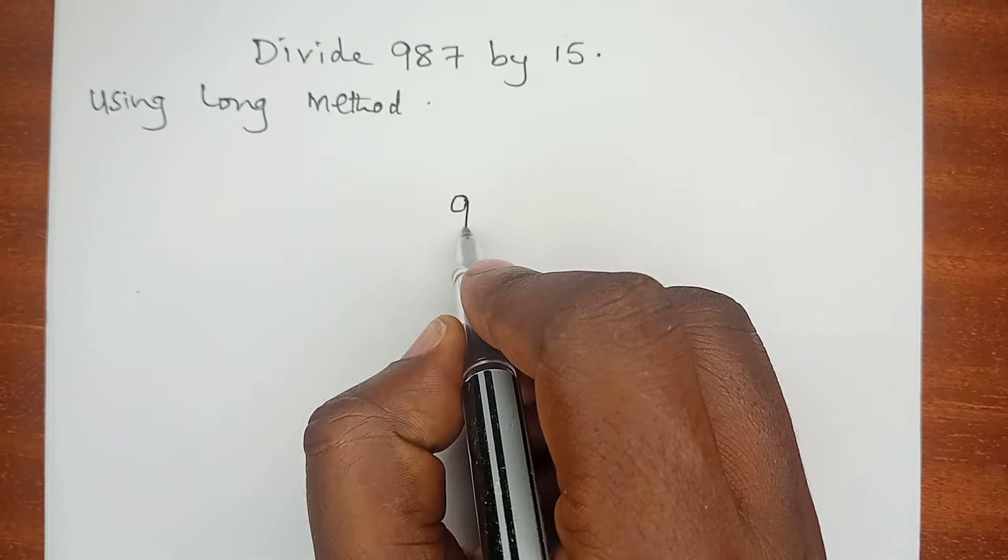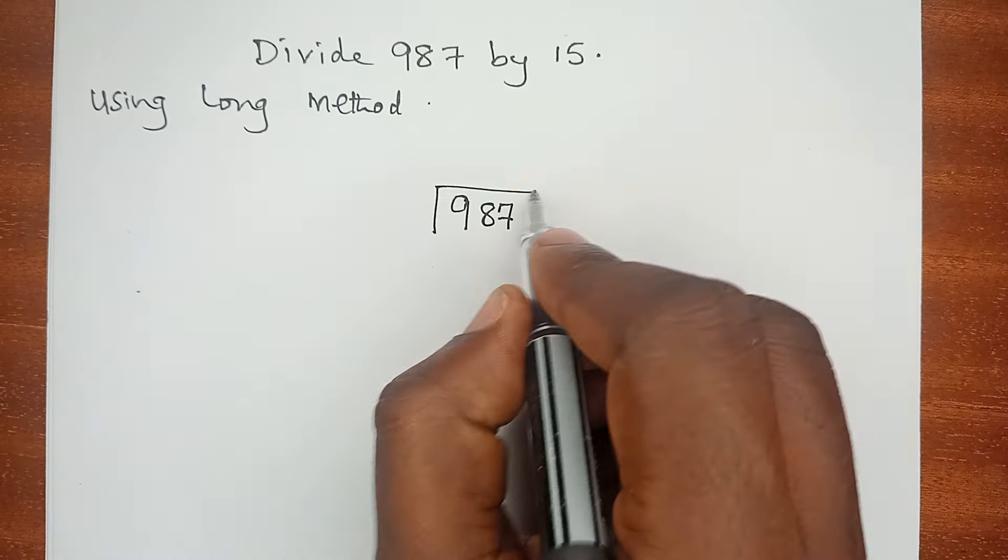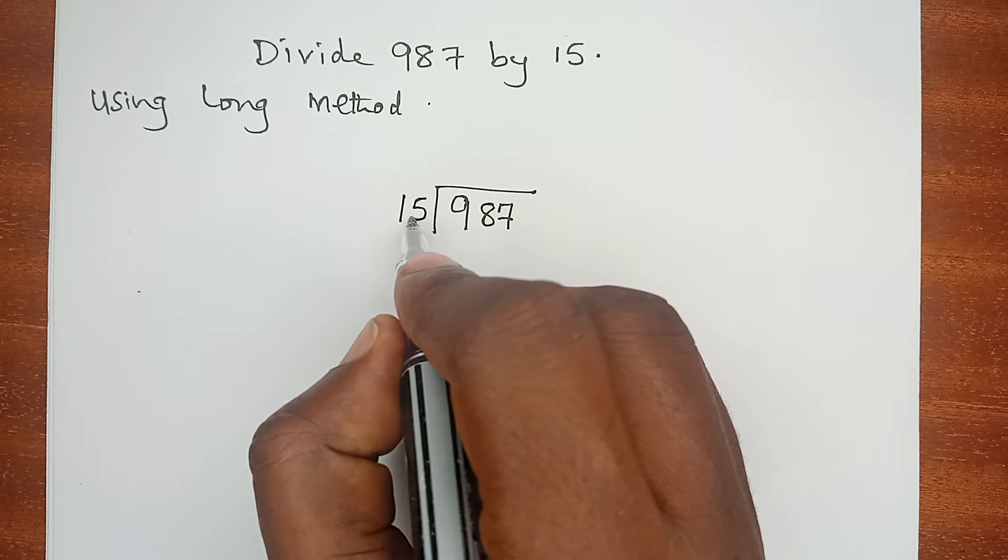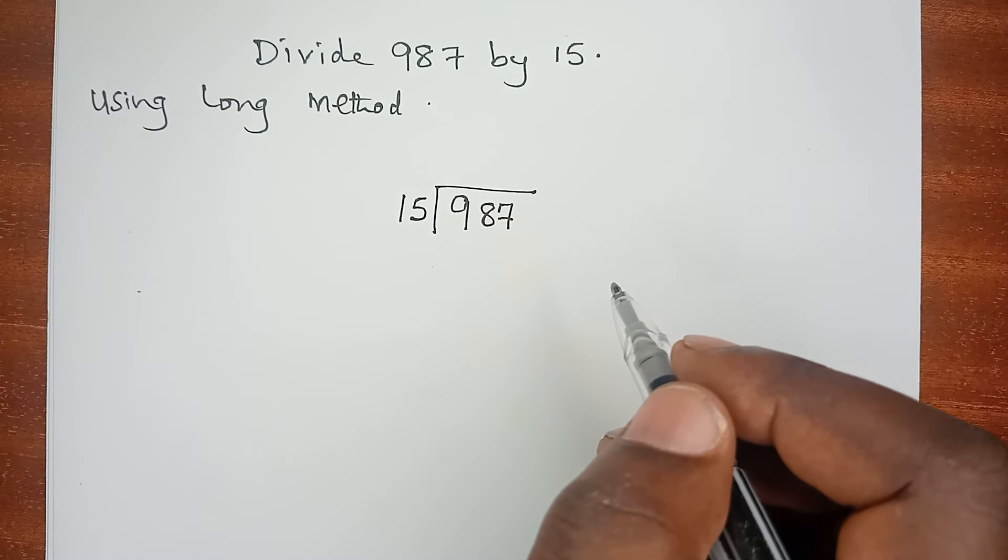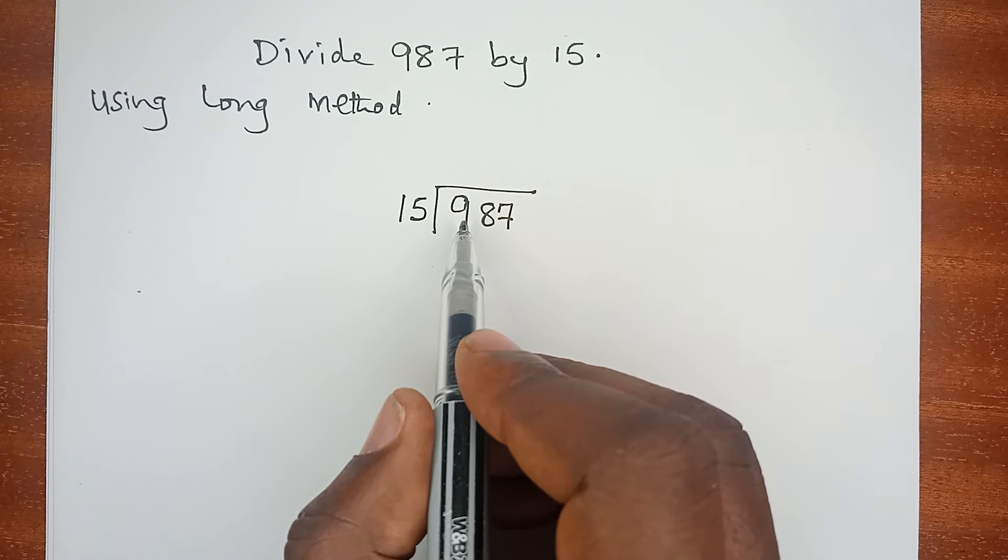In this video we want to divide 987 by 15 using the long method. We have 987 divided by 15, and we ask ourselves, can 15 go into 9?